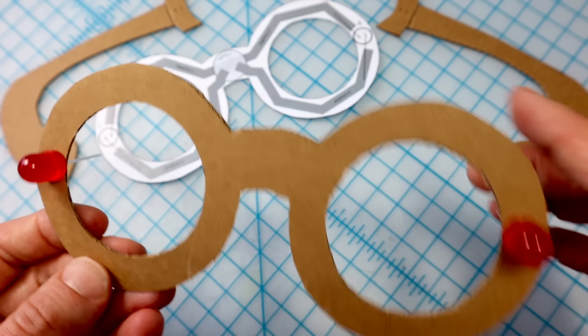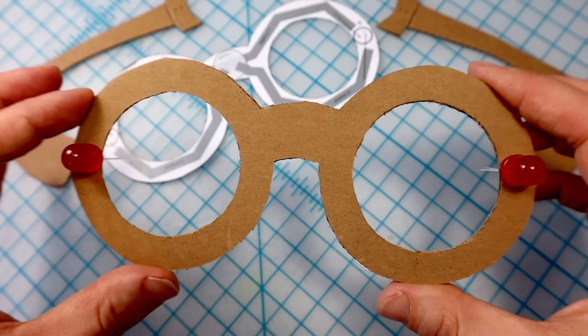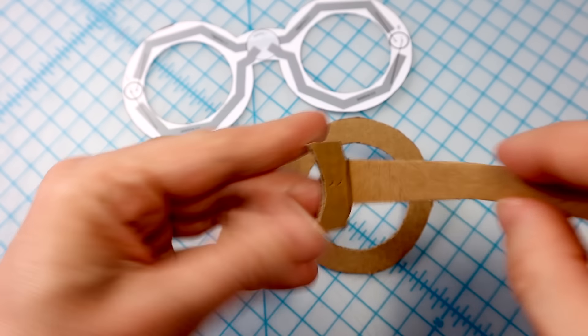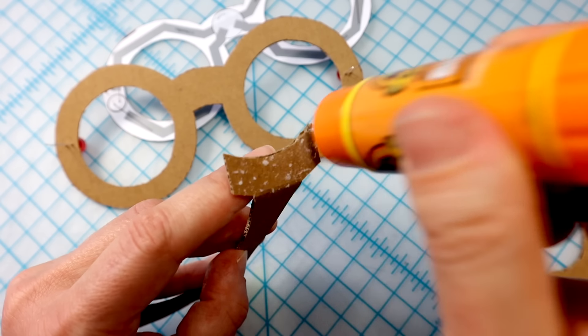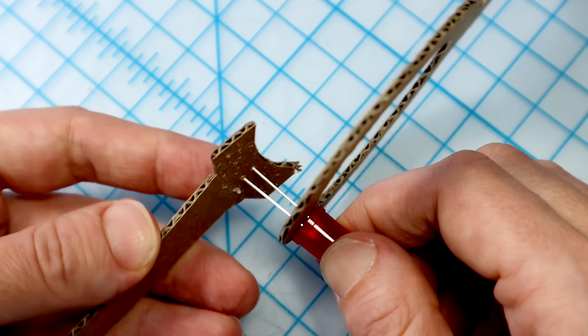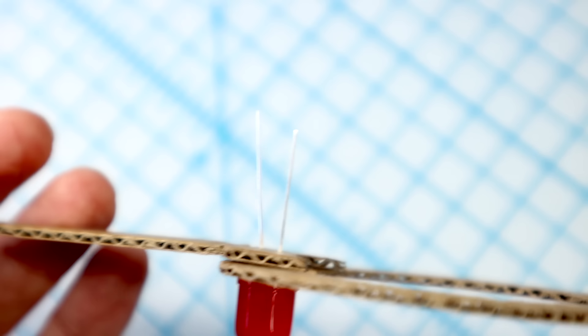Push the LEDs through the holes in the frames with the positive, long leg facing away from the center. Fold the temples along the line, then add glue to the side that touches the frame. Thread the LED through the holes, aligning it with the frames to glue the temples in place.